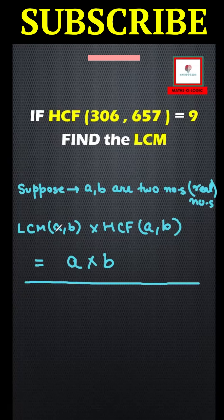Now I am going to apply this formula like A is equal to 306 and B is equal to 657. Now I can just find the LCM of A and B.